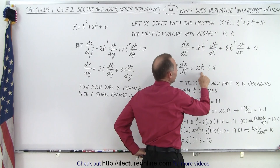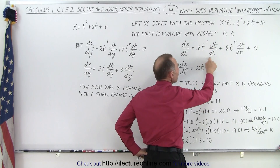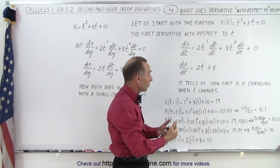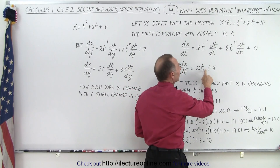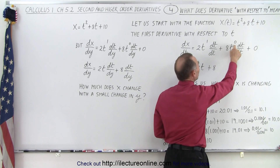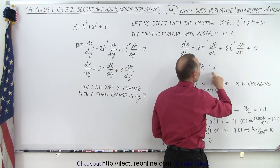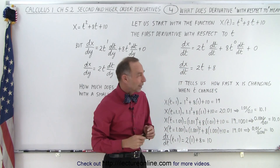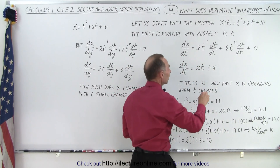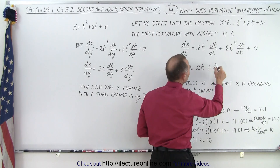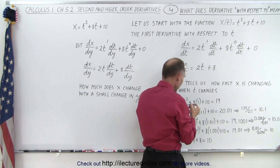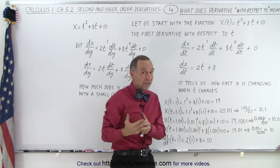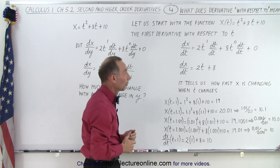t to the first power is simply t, and dt/dt equals 1 — it's like a fraction with the same numerator and denominator — so we don't write it. Then 8 times t to the 0 power is 8 times 1 which is 8, and again dt/dt equals 1 so we don't write it. That's why we get confused: since we don't write the dt/dt, we don't realize it really needs to be there for full comprehension.